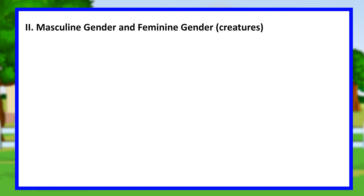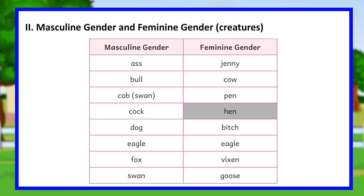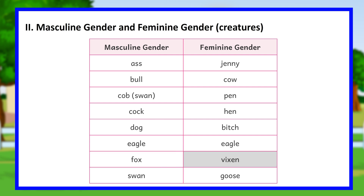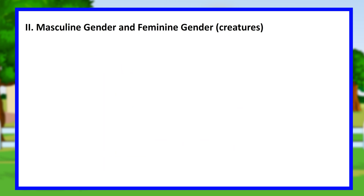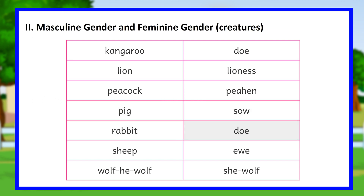Masculine and feminine gender for creatures — masculine / feminine: ass/jenny, bull/cow, cob/pen (swan), cock/hen, dog/bitch, eagle (male)/eagle (female), fox/vixen, gander/goose, kangaroo/doe, lion/lioness, peacock/peahen, pig/sow, rabbit/doe, sheep (ram)/ewe, wolf/she-wolf.